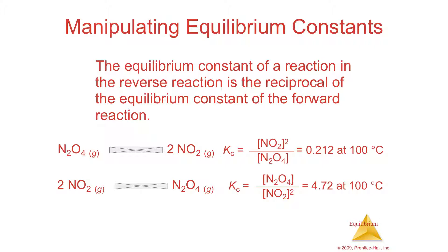Another important concept: if you run a reaction backwards, you have forward and reverse reactions. In the forward direction, products are in the numerator and reactants in the denominator, giving a certain K_c. If you think of the reaction in reverse — where your products become your reactants — you flip those two numbers. You then get the reciprocal, not the same number.